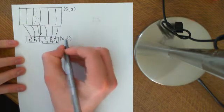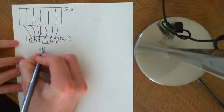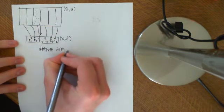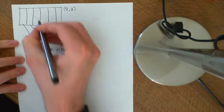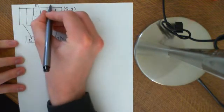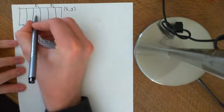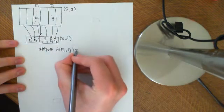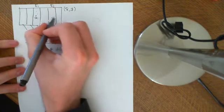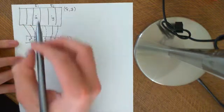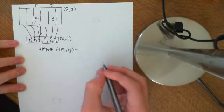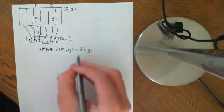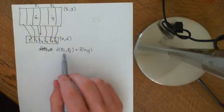We define the metric on this set. The way we do it is we define the distance between Ei and Ej: you simply pick any two representatives you want — a representative of the equivalence class Ei and a representative of the equivalence class Ej — and you work out what their pseudometric distance is from one another. That pseudometric distance is the number you're going to use as the distance between these two equivalence classes.